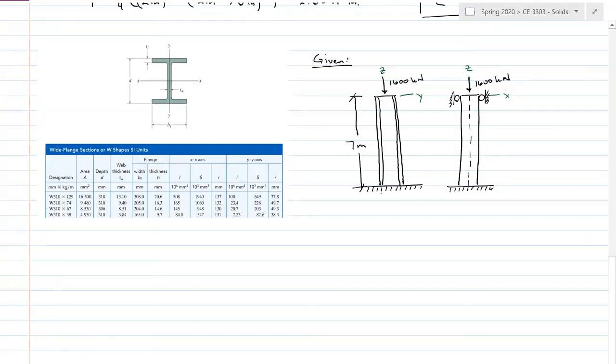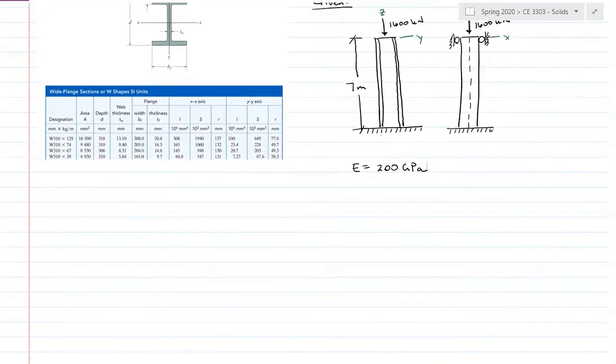So what I've created is one direction that's fixed-free and one direction that's fixed-pinned. 1600 kilonewtons. I'm putting a big old load on here so that it falls within my range here. I'm going to make this all out of steel. So that is 200 gigapascals for my modulus of elasticity.